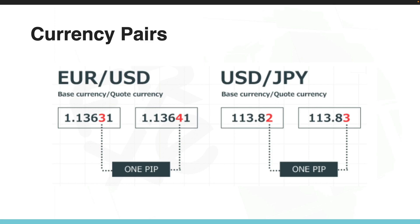However, there are some currency pairs such as the Japanese yen where a pip represents the second decimal place in the exchange rate. For example, we see 113.82 move to 113.83 — on the second decimal place you see an increase of one pip, from two to three.